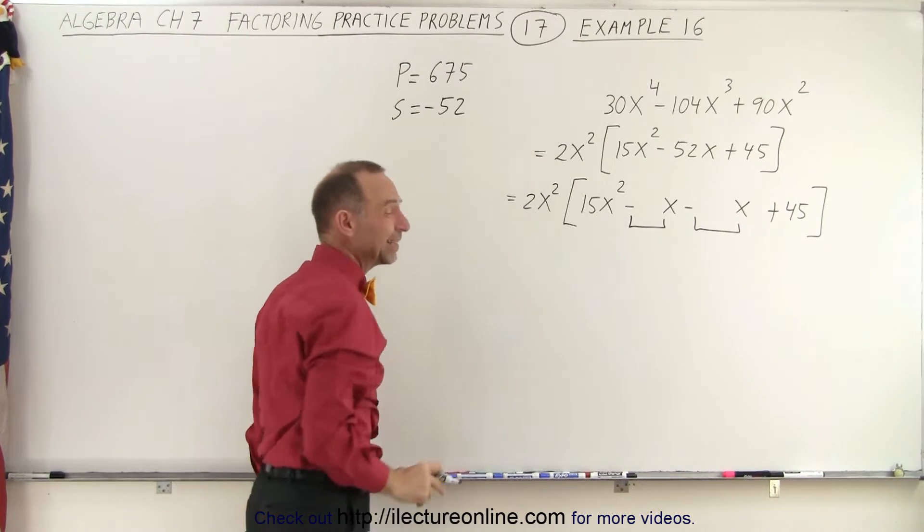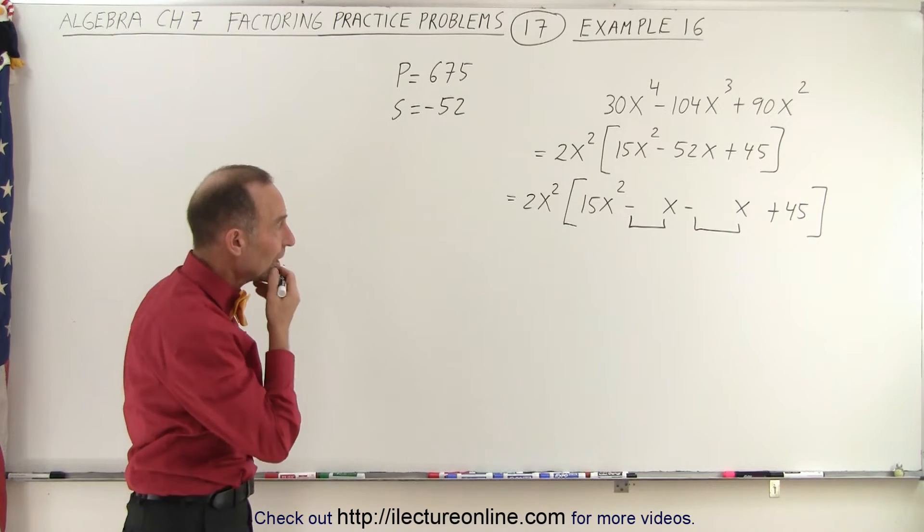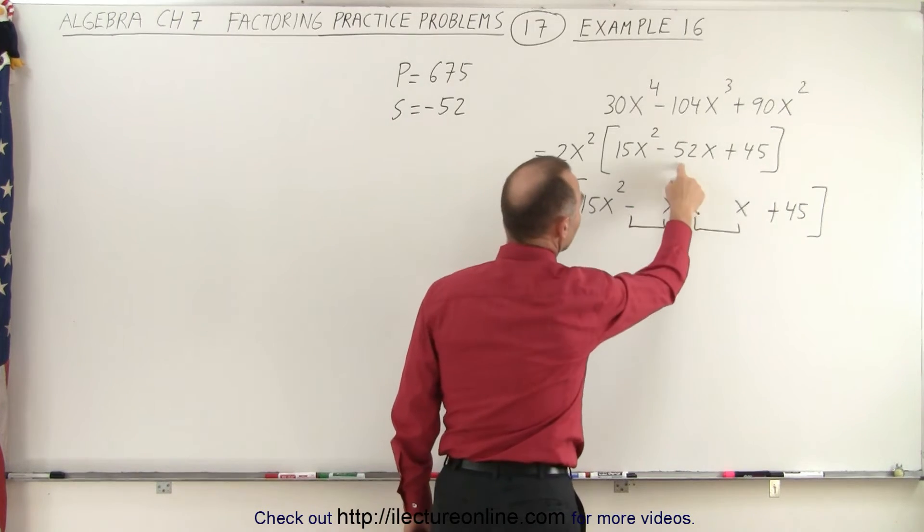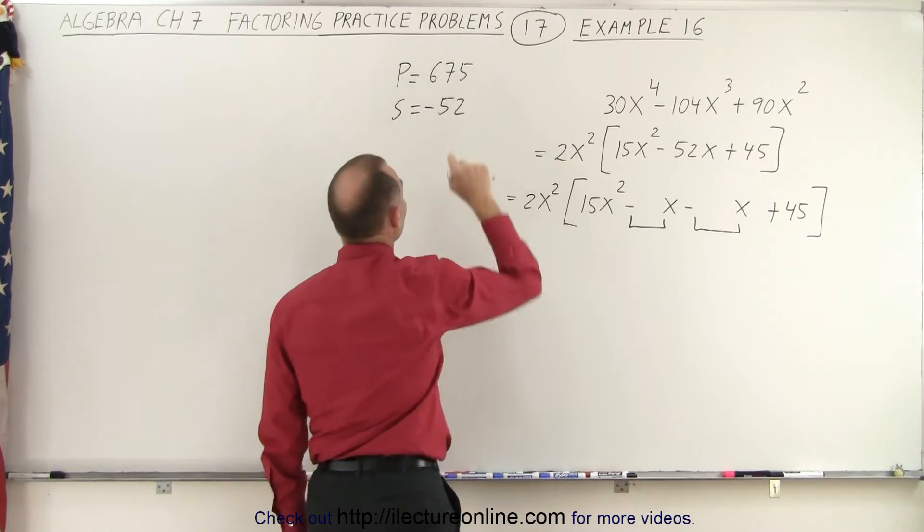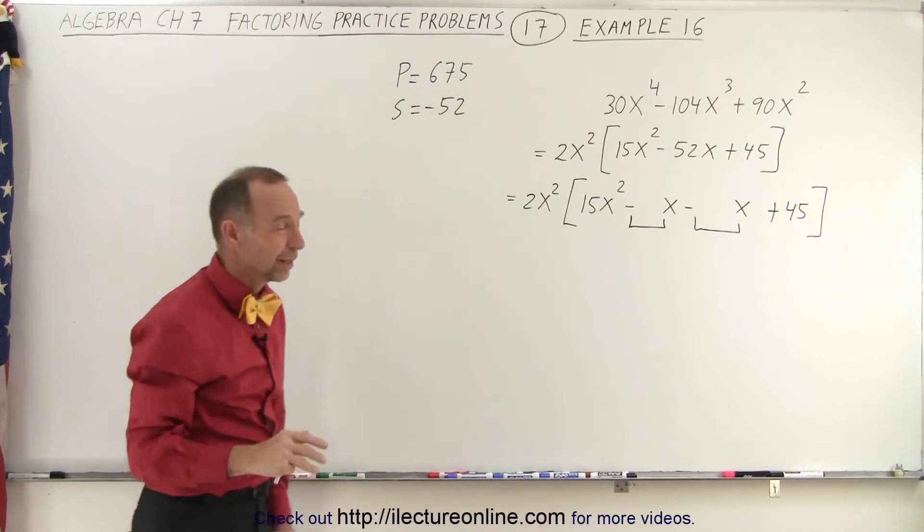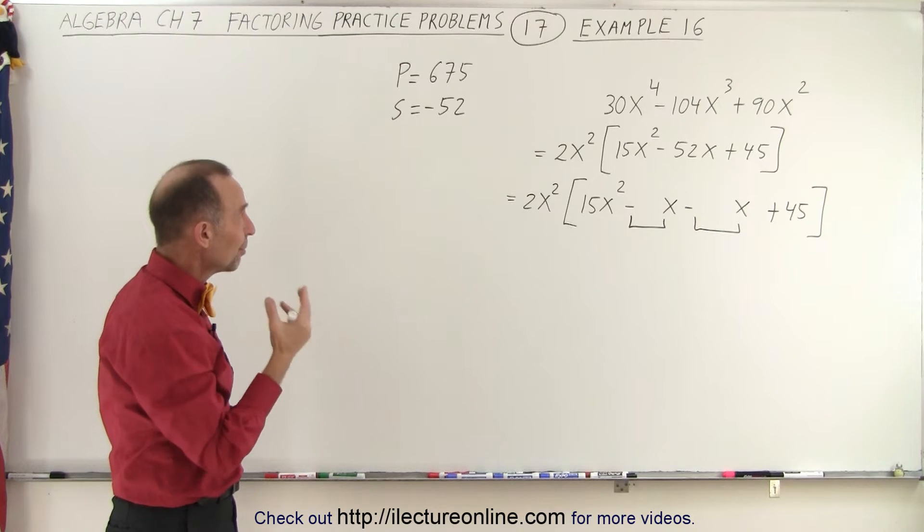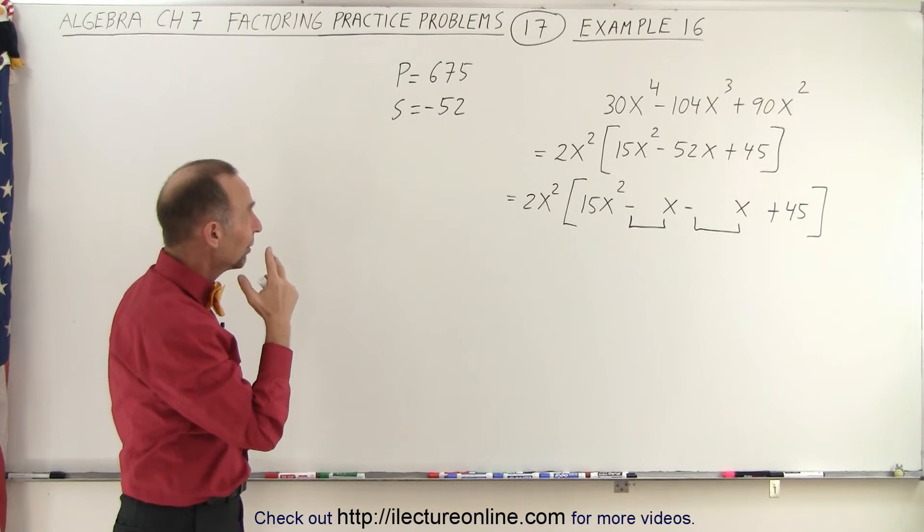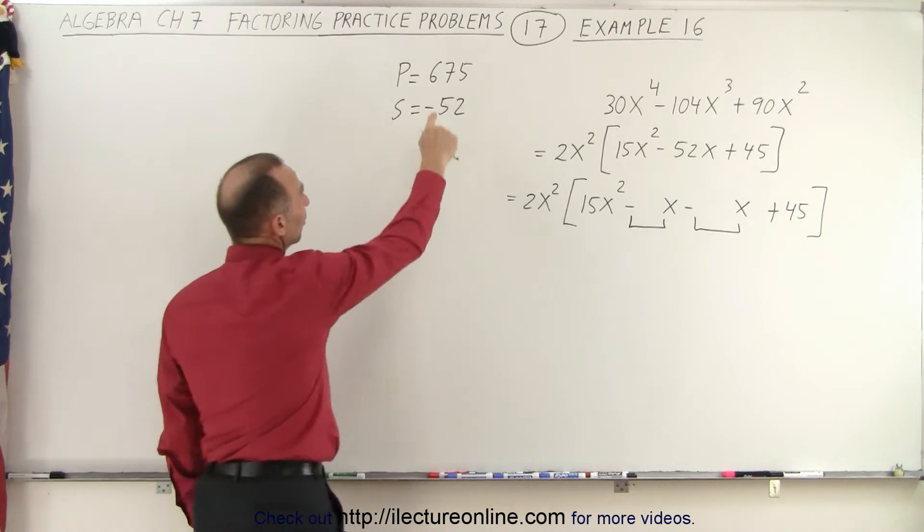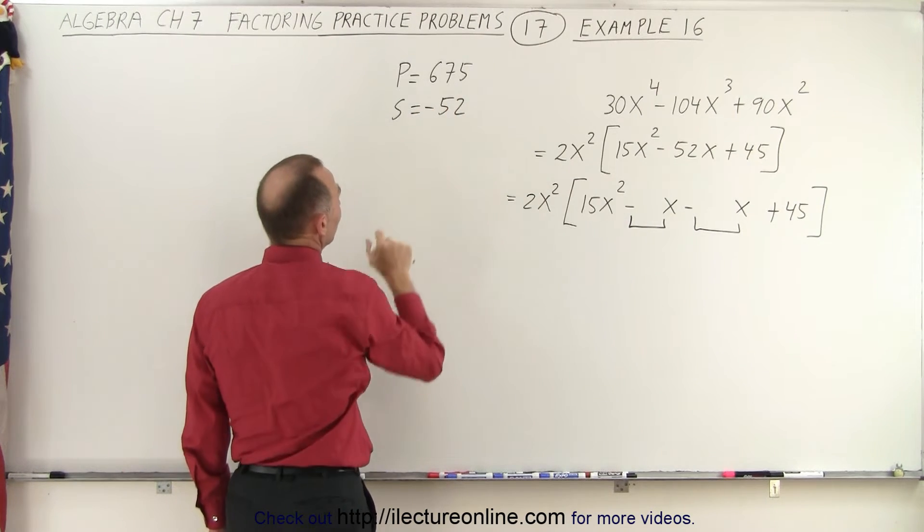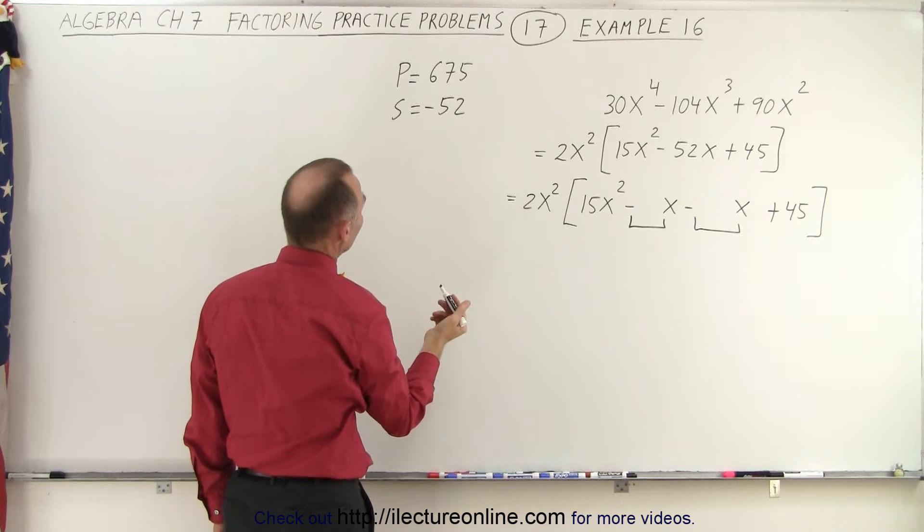So when the numbers become big like that, it gets a little bit more challenging. So we know that when we add them, we get negative 52. When we multiply the two numbers together, we get positive 675. They're both negative. You multiply, you get 675. When you add them, you get negative 52. Since this number is pretty big, the two numbers must be close together.